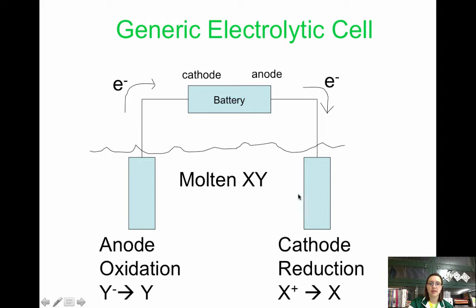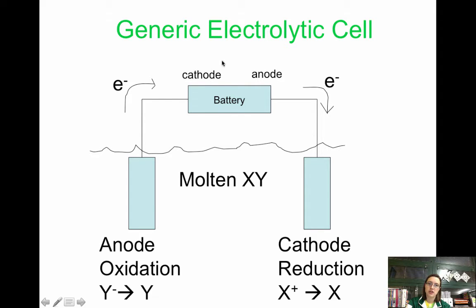The electrons still go from the anode to the cathode. Notice that the battery has its own anode and cathode. The anode electrode is negative, so it's going to be attracted to the positive terminal of the battery. The cathode electrode is positive, so it's going to be attracted to the negative side of the battery. With the electrolytic cell, generally you have two inert electrodes — maybe platinum or graphite.